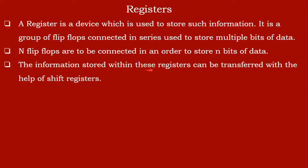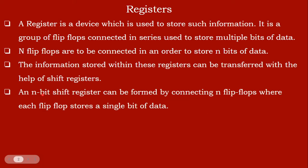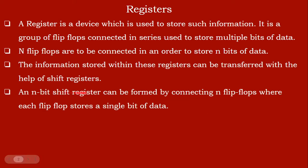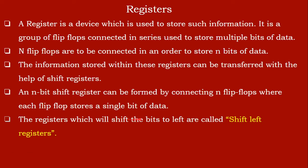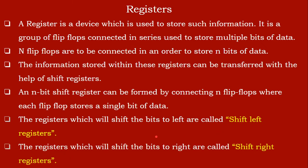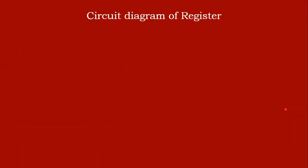The information stored within these registers can be transferred with the help of shift registers. As the name implies, shift registers shift the data from one register to another. An N-bit shift register can be formed by connecting N flip-flops, where each flip-flop stores a single bit. Registers that shift bits to the left are called shift left registers, and those that shift data to the right are called right shift registers.